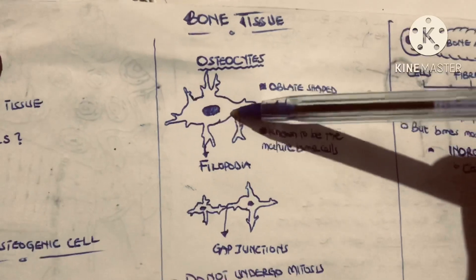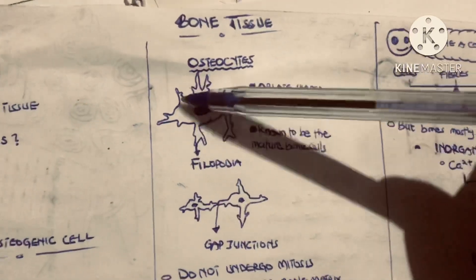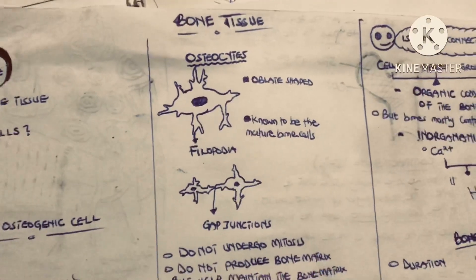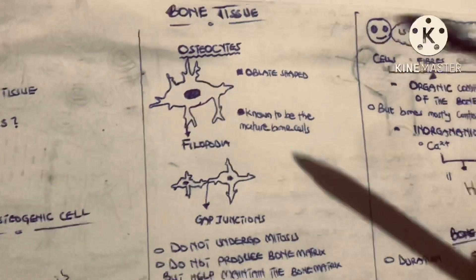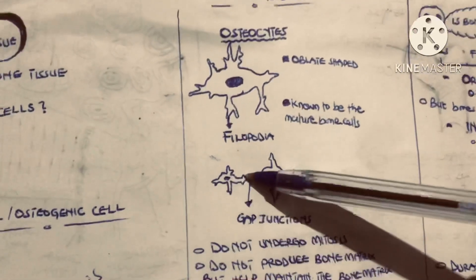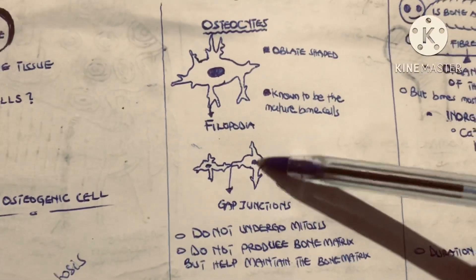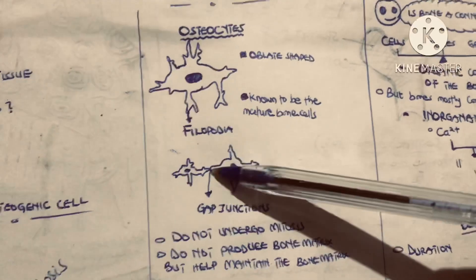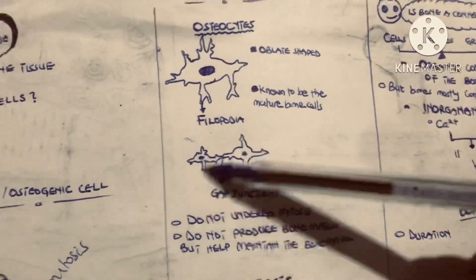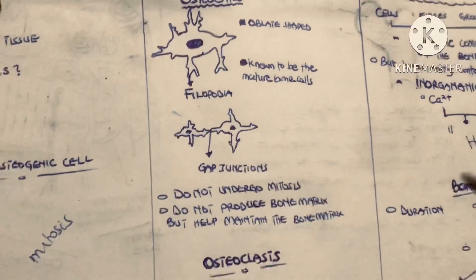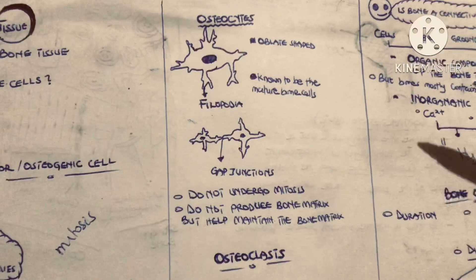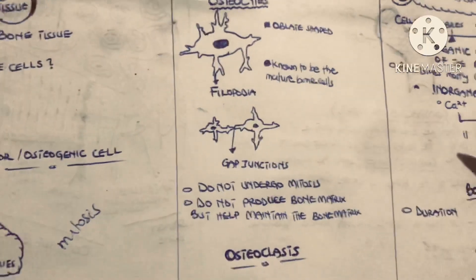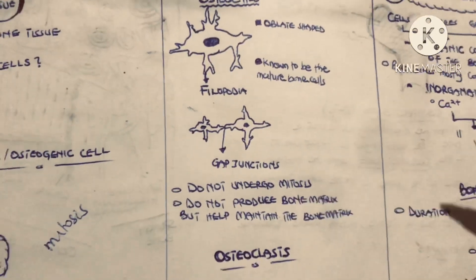The osteocytes are oblique-shaped and mononucleated. They also have extensions called filipodia. They are known as the mature bone cells — osteoblasts are immature bone cells, but osteocytes are mature. The filipodia of one osteocyte attach to the filipodia of adjacent osteocytes, forming junctions called gap junctions. Within these gap junctions, there is exchange of nutrients, ions, and other substances. Unlike the osteogenic cell, osteocytes do not undergo mitosis.